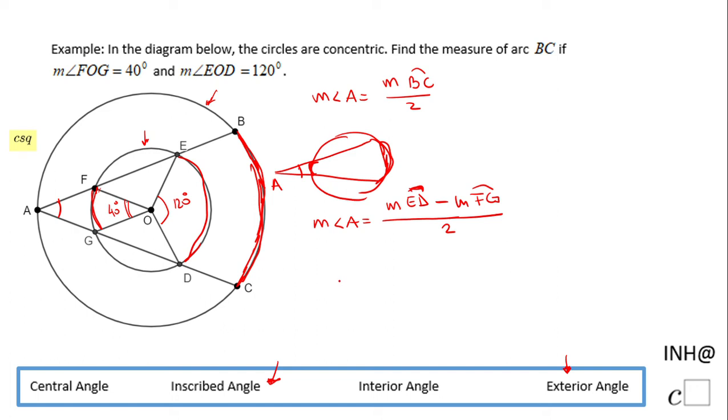So this is the measure of angle A, the difference between these two arcs divided by two. But how do I find the measure of arc ED and the measure of arc FG? We're going to have to take a look at these two angles given to us.